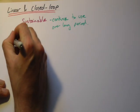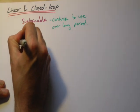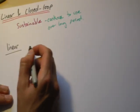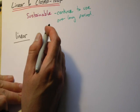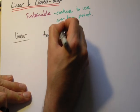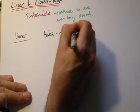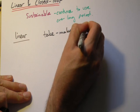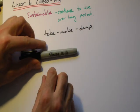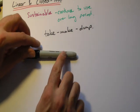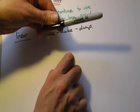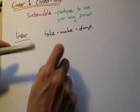A lot of human ecosystems, when we interact, are what we call a linear model — and linear just means line. The book talks about a take, make, and dump society. Here's a simple example: we take oil out of the ground, we use it to make things like plastics, and then when it's run out, it gets dumped, thrown in the bin, thrown in the landfill.